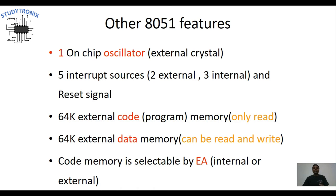The three internal interrupts include two generated by the timers. Whenever a timer overflows — that is, the timer value reaches FFFFh and one more clock pulse is given — the timer rolls back to 0000h and generates an interrupt signal. Since there are two timers, there are two timer interrupt signals. The third internal interrupt is the serial port interrupt, generated when 8-bit data is received or when a transmission of 8 bits is completed.